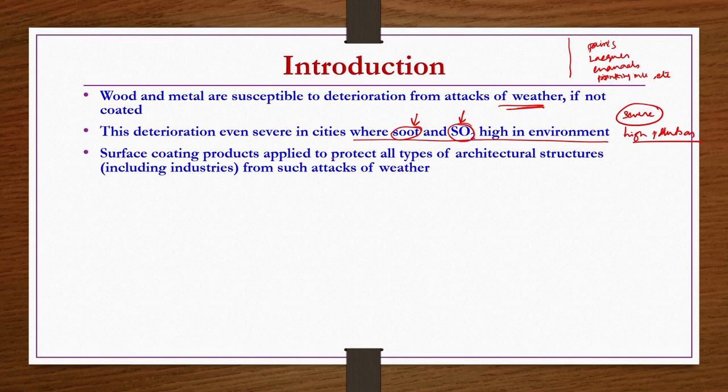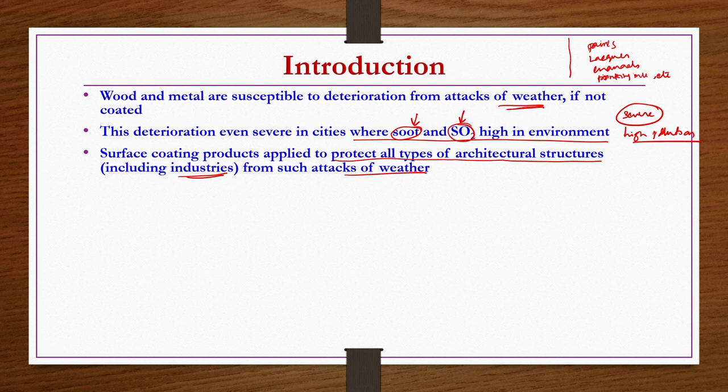Surface coating products are applied to protect all types of architectural structures including industries from such weather attacks. Depending on the surface or structure being coated, you have to select the appropriate surface coating product — one product is not going to be useful for all kinds of surfaces. Different types of products exist for different requirements and application methods.